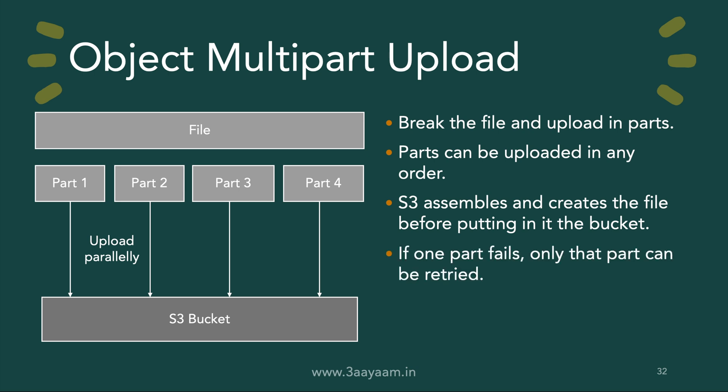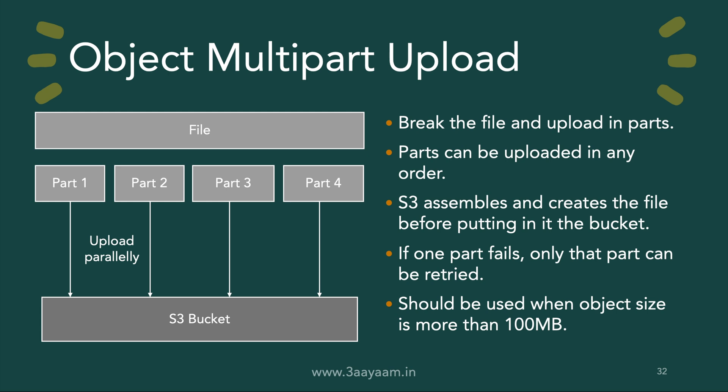Another advantage is that if one of the parts fails, only that part needs to be retried. Imagine uploading a file of 200 GB — you'd need your machine to stay awake and your network to stay up the whole time. Instead, you can break the file into pieces, upload them in parallel, and if some parts fail, restart only those parts, not the entire file. As a best practice, multi-part upload should be used when the object size is more than 100 MB.